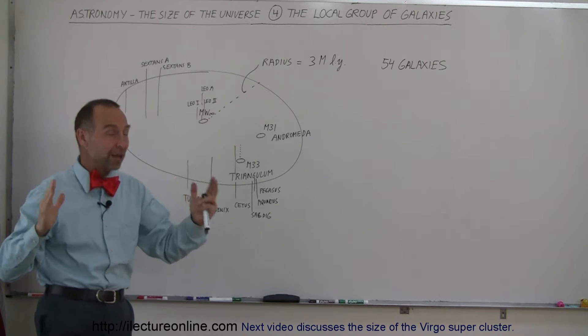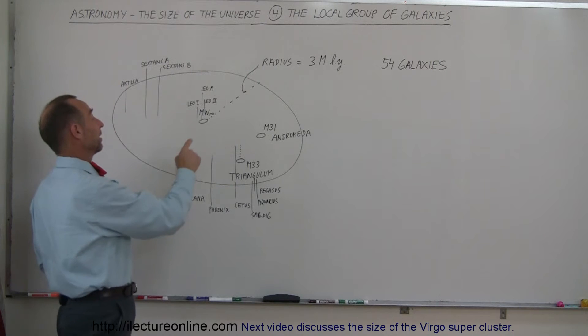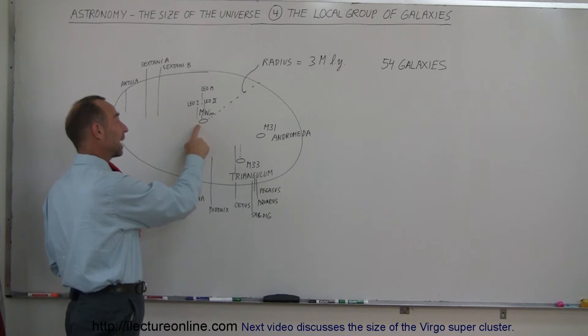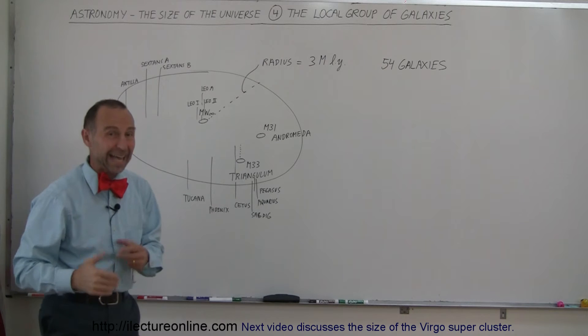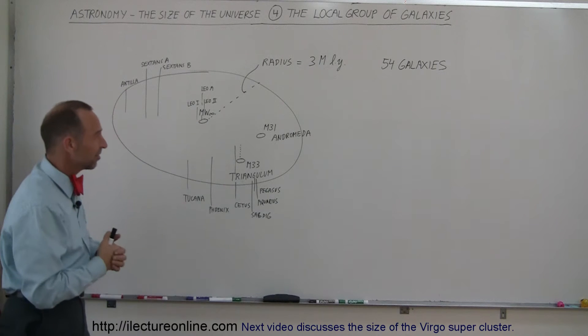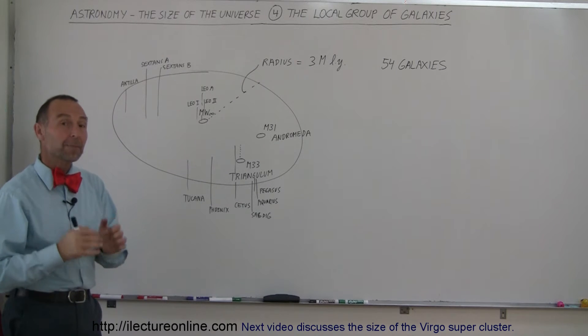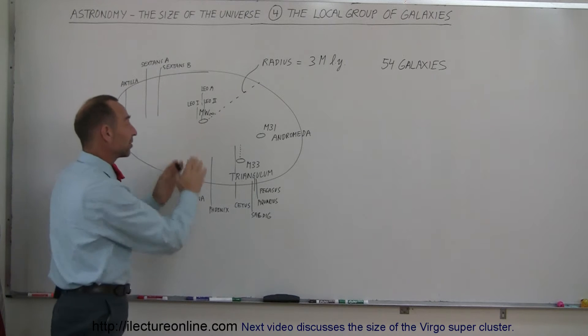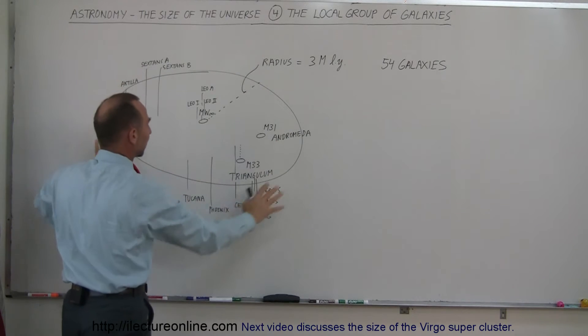In a previous video we discussed how big our Milky Way galaxy is. It was roughly 100,000 light years across, which meant that light would take 100,000 years to travel from one end of the galaxy to the other at the speed of light, which is 186,000 miles per second. But our galaxy, the Milky Way galaxy, is actually part of a family of galaxies.